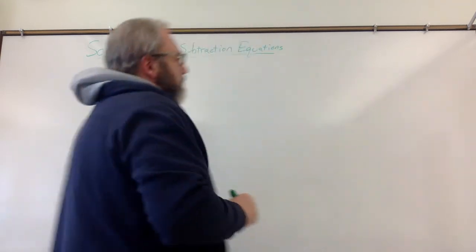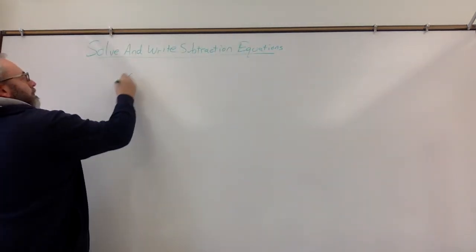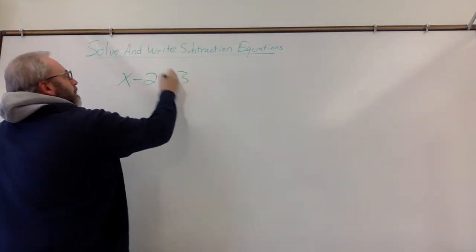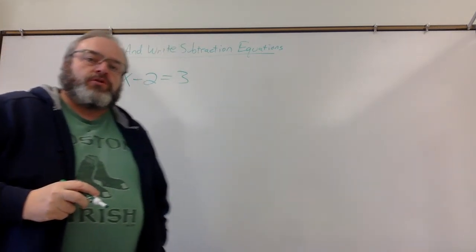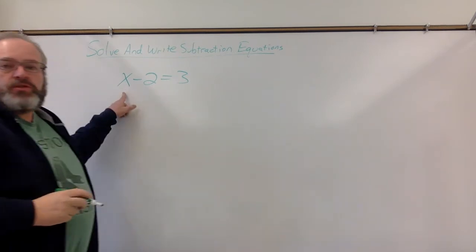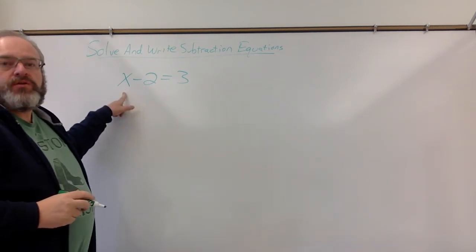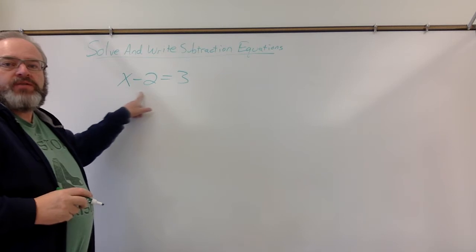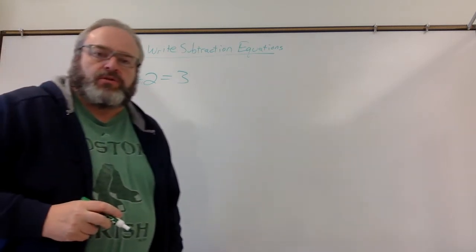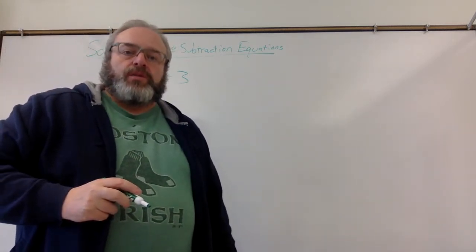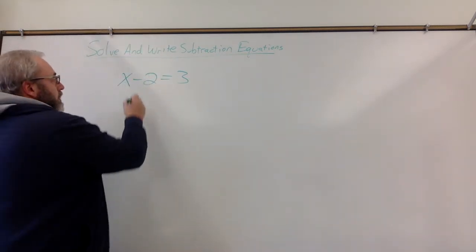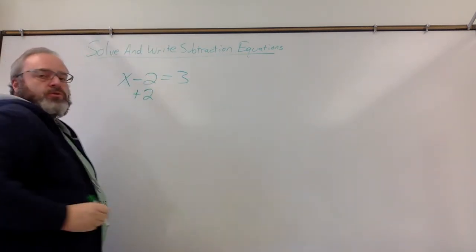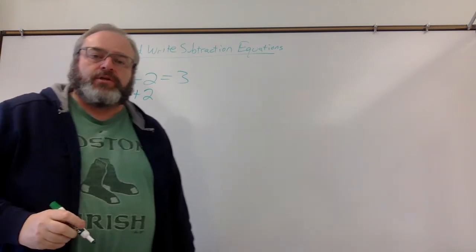So, for example, x minus 2 equals 3. In order to solve this, and solving this means we want the x to be left by itself, we need to get the minus 2 to cancel out. To do that, we need to do the opposite of subtracting 2, which is adding 2.